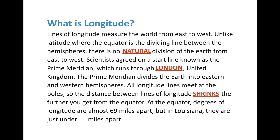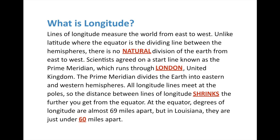At the equator, lines of longitude are almost 69 miles apart, which is a little different than lines of latitude — meaning the Earth isn't exactly a perfect sphere. That's because whenever something spins on an axis, the mass kind of squishes. So the Earth is actually a little bit wider at the equator than it is in length. Here in Louisiana, the lines of longitude are just under 60 miles apart. So between the equator and Louisiana, we've lost 10 miles in distance between lines of longitude.